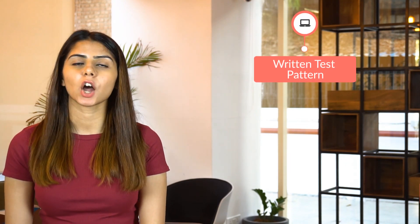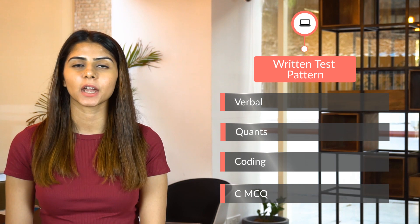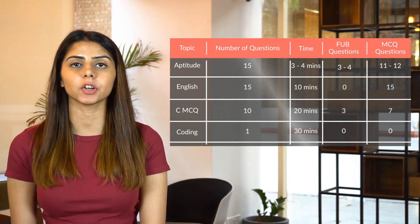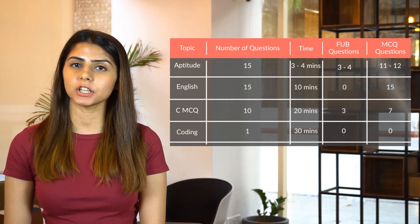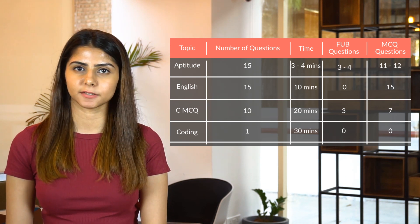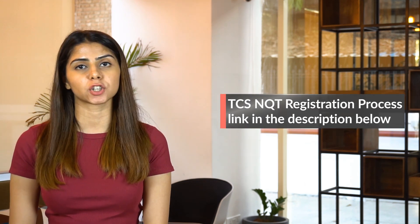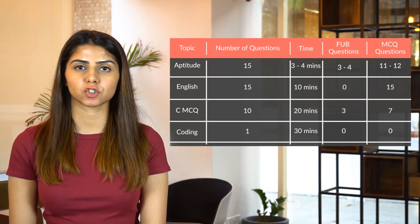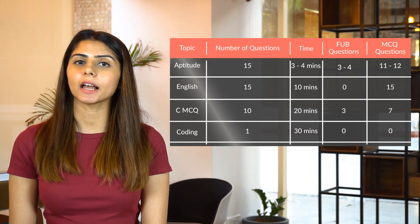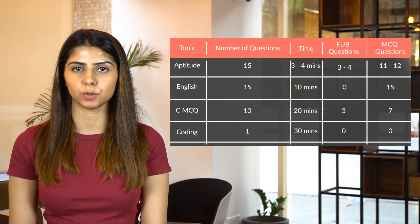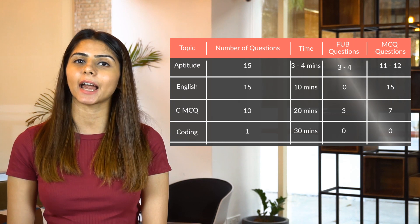The written test pattern has four sections: verbal, quants, coding, and CMCQ. TCS NQT test pattern recently changed and we are discussing the most updated pattern here. The aptitude section has 15 questions and you get 30 minutes to attempt it. For English you have the close test, which has 15 questions and 10 minutes to solve. The CMCQ section, also called the programming logic section, has 10 questions and 20 minutes. The coding ability round has only one problem and 30 minutes. In total there are 41 questions and 90 minutes.